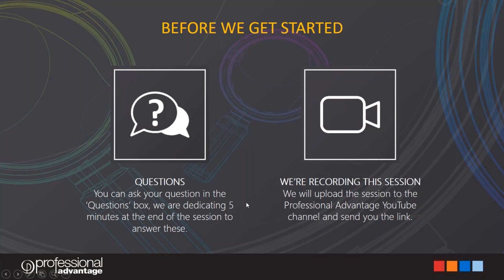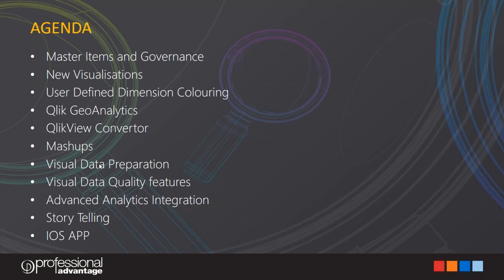All right, I'm going to show you a number of features — some new, some that have been evolving for a while within the Qlik world. We're going to talk about master items and governance, which is an important feature of Qlik Sense. We'll cover new visualizations and user-defined dimension coloring, Qlik Geo Analysis, the QlikView converter, mashups, visual data preparation, data quality features, advanced analytics integration, storytelling, and finally the iOS app.